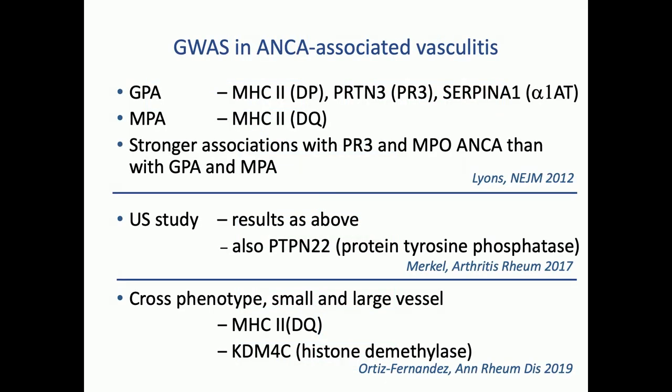Genetics first, briefly. We did the first GWAS, led by Ken Smith at Cambridge. The results were astoundingly interesting. For GPA, we found an MHC link, as you'd expect, and also linkages to proteinase 3 — the autoantigen — and alpha-1 antitrypsin, which is its natural inhibitor physiologically. So where in some GWASs you get a hit on a genetic interval with nothing of interest, here the hits we got were all highly relevant to the disease.